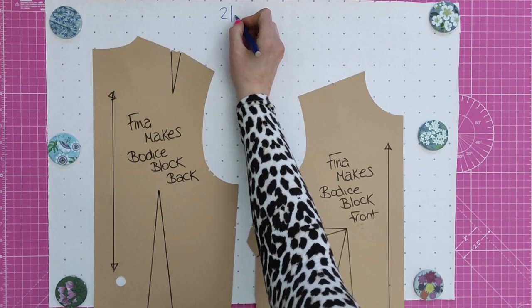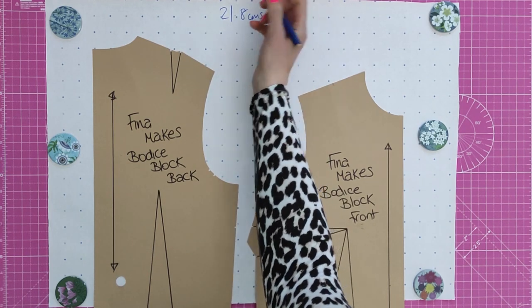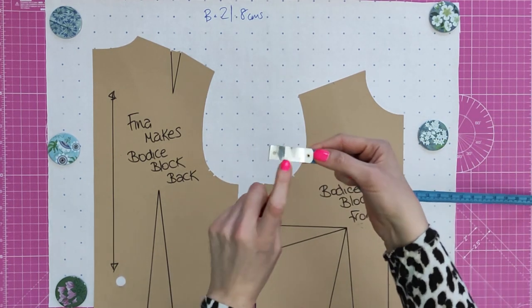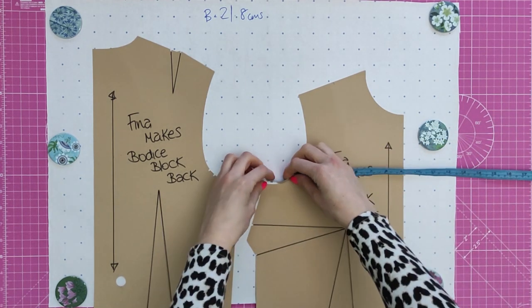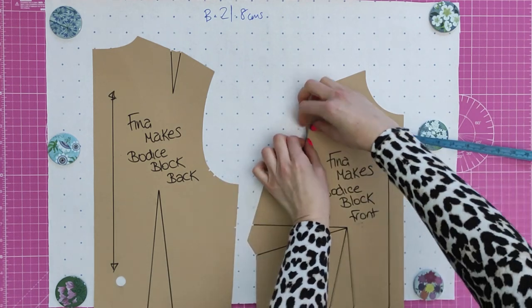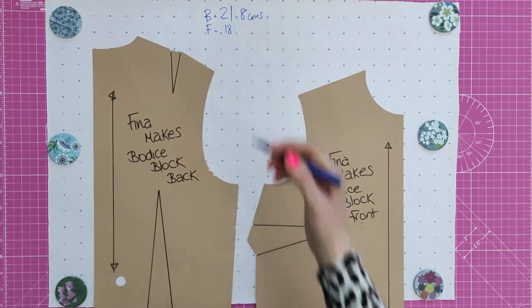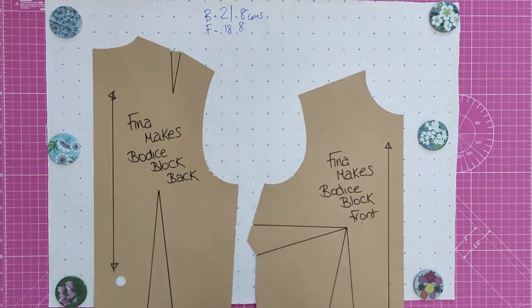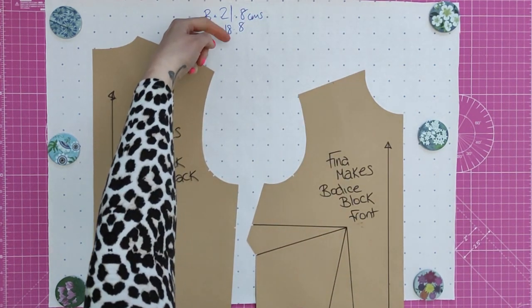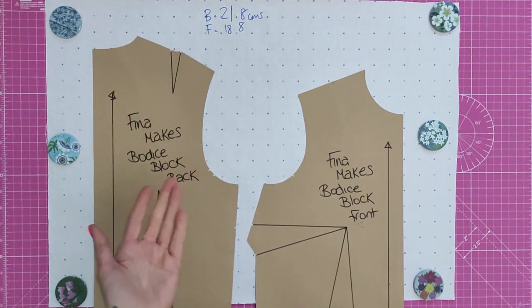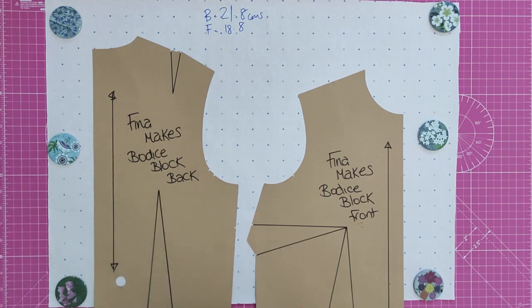So that's 21.8 centimeters. Repeat that for the front. If you've got a tape measure with metal on it, you can just bend the metal. So that is 18.8 centimeters. You'll notice I've got a 3 centimeter difference between the front and the back. This varies for different bodies. It's usually about 2 or 3 centimeters different front and back. It depends on your shoulder position and the shape of your armhole.